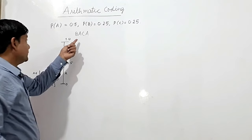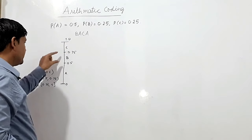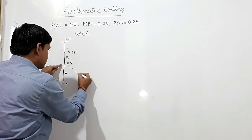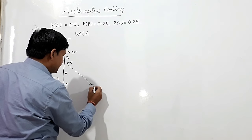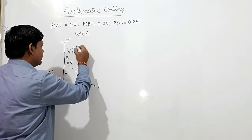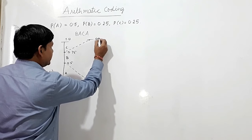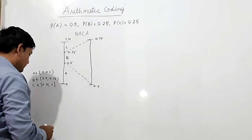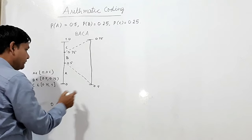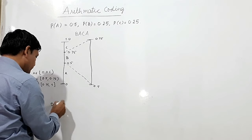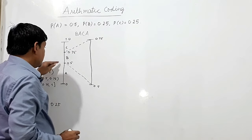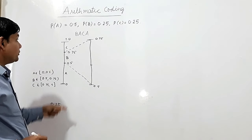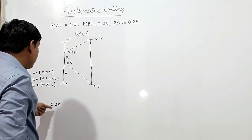We have to find the arithmetic code for the sequence BACA. For the first symbol B, I take B's interval: the lower limit is 0.5 and the upper limit is 0.75. The width of this interval is 0.75 minus 0.5, which equals 0.25. Since probability of A is 0.5, half of 0.25 will give A's sub-interval width.